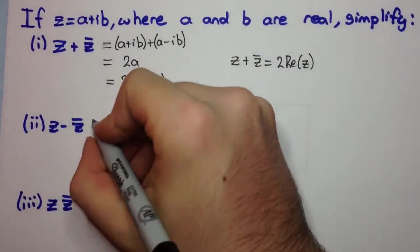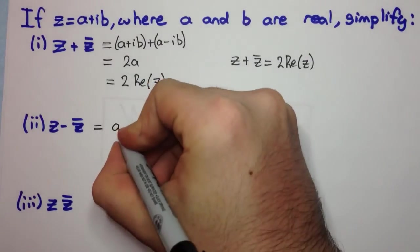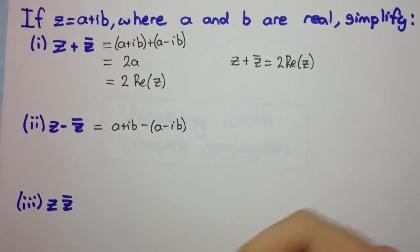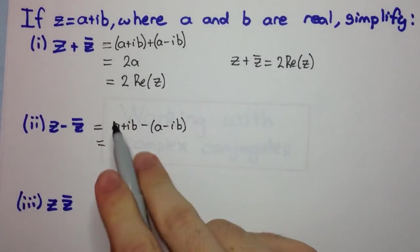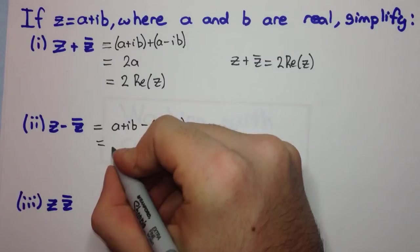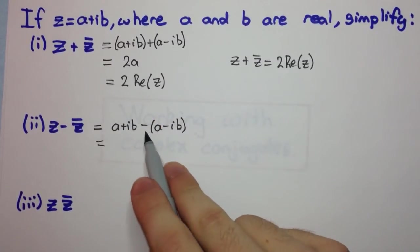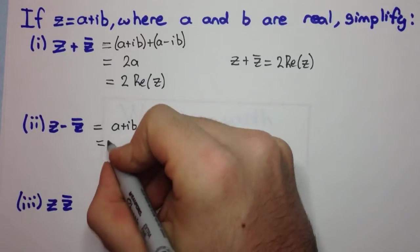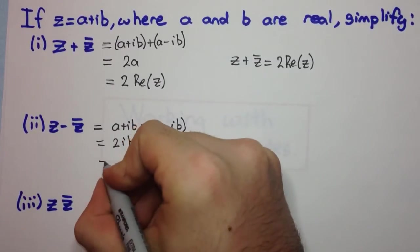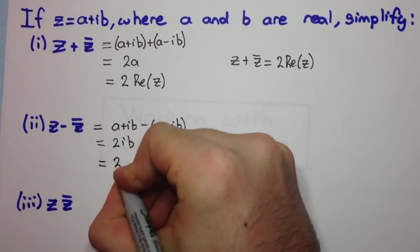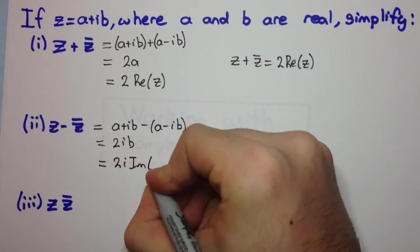Now z minus z bar. That's going to be a plus ib minus a minus ib. We subtract complex numbers as if we were collecting like terms of an algebraic expression. So here we have a minus a, which is zero, and ib minus minus ib, which is ib plus ib, which is of course 2ib. And once again, this is twice the imaginary part — here we have 2i times the imaginary part of z.